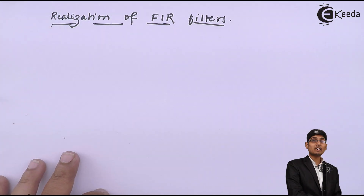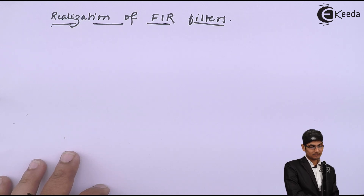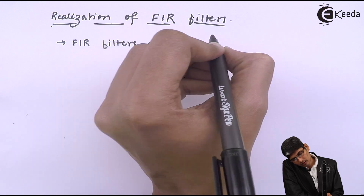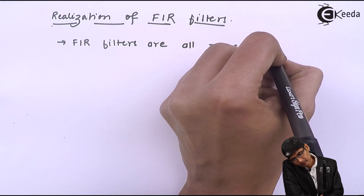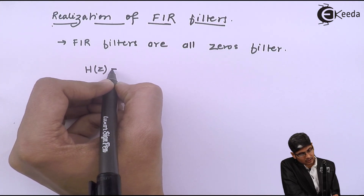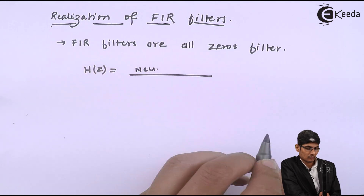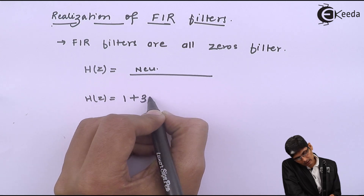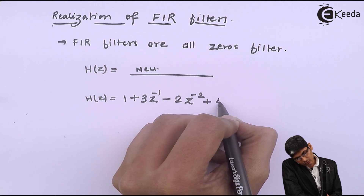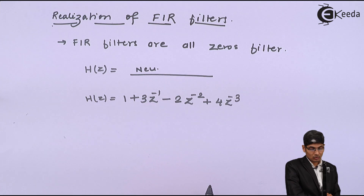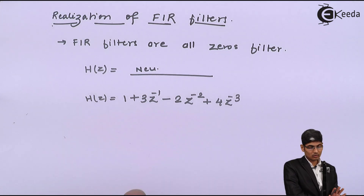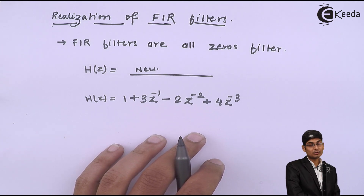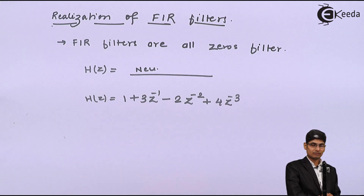Let us know how to actually realize a filter or design a filter using the elements. FIR filters are all-zero filters. That means if I write H(z), the H(z) will have only the numerator part — there will be no denominator. For example, H(z) = 1 + 3Z⁻¹ - 2Z⁻² + 4Z⁻³. This is a third-order FIR filter which has only zeros, no poles. We are going to see the structures used in a practical scenario to design FIR filters.